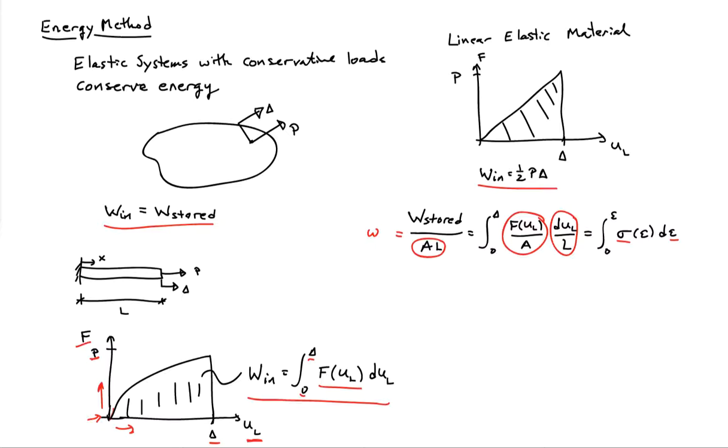If the material is linear elastic, this also gives us a simple straight line relationship between sigma and epsilon. And so for the value of the integral, we have one-half sigma epsilon, or one-half sigma squared over E, or also one-half E times epsilon squared. So we have a number of different expressions that we can use for the stored energy density little W.